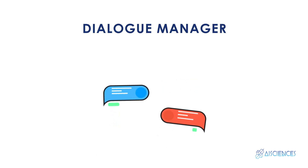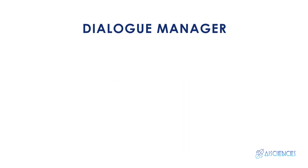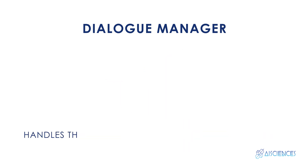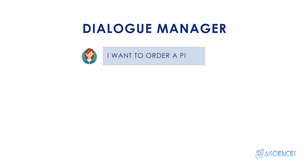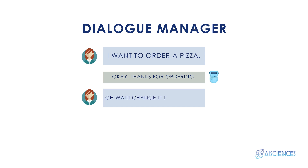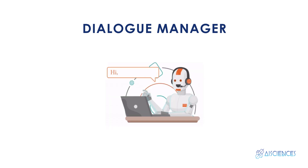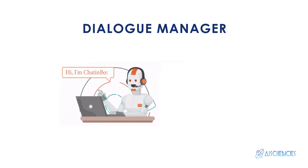The second component is the Dialogue Manager, DM. As the name suggests, it handles the actual context of the user's dialogue. For instance, the user types 'I want to order a pizza' and the chatbot takes the order. In a while, the user changes his mind and types 'change it to hot dogs.' In this scenario, the user is swapping the order that was made earlier, so the chatbot should correctly understand this and make changes to the order. The Dialogue Manager helps the chatbot to accomplish this.